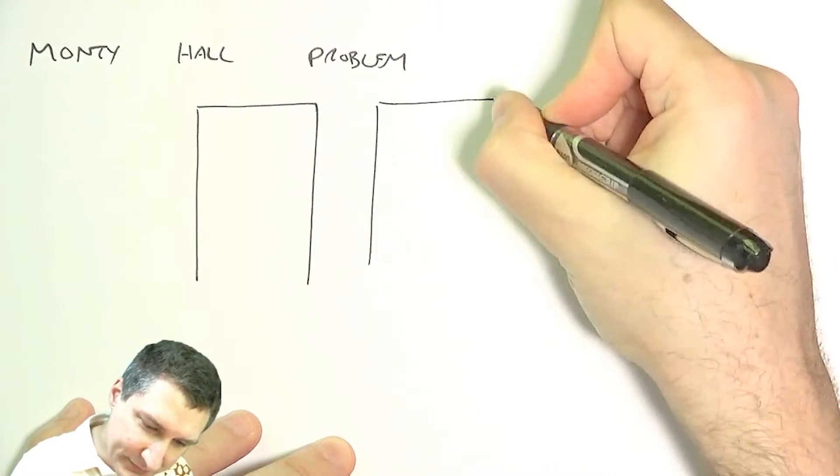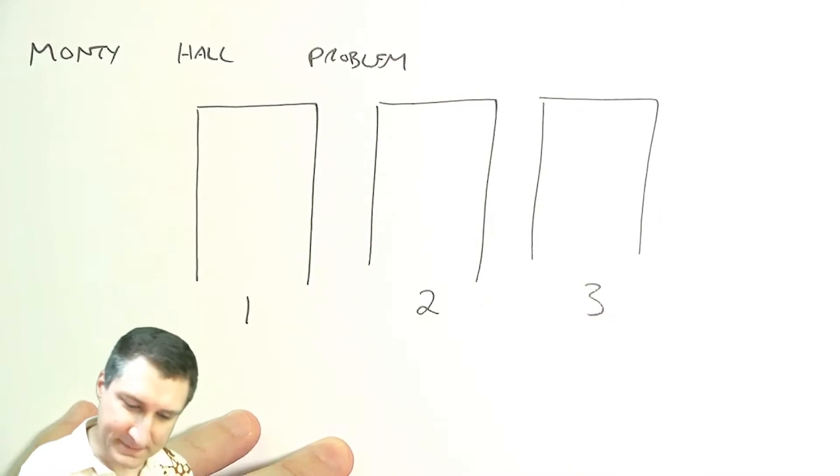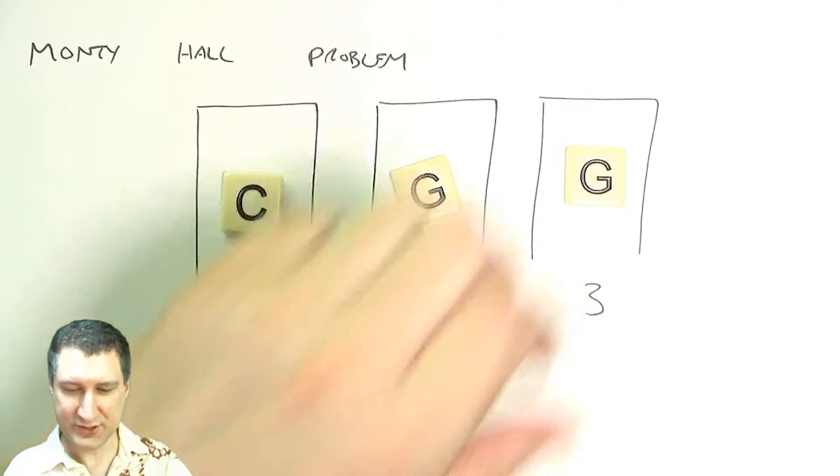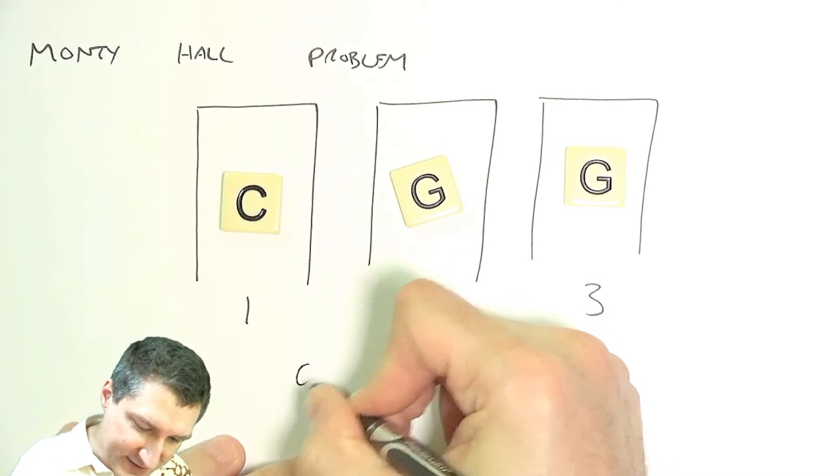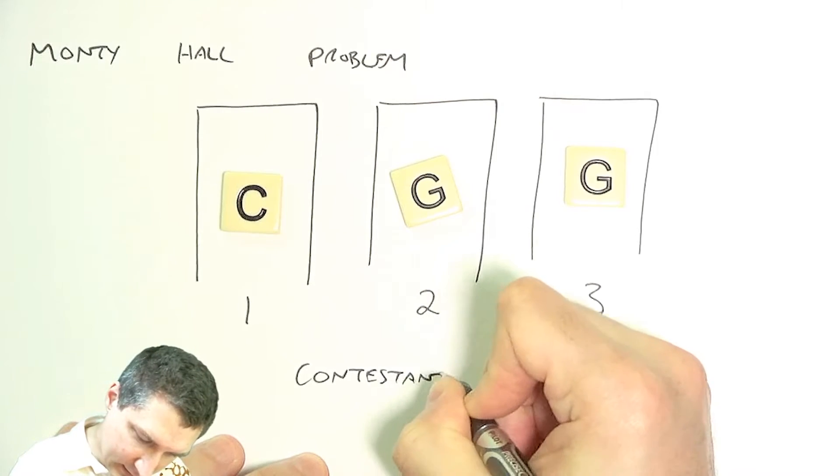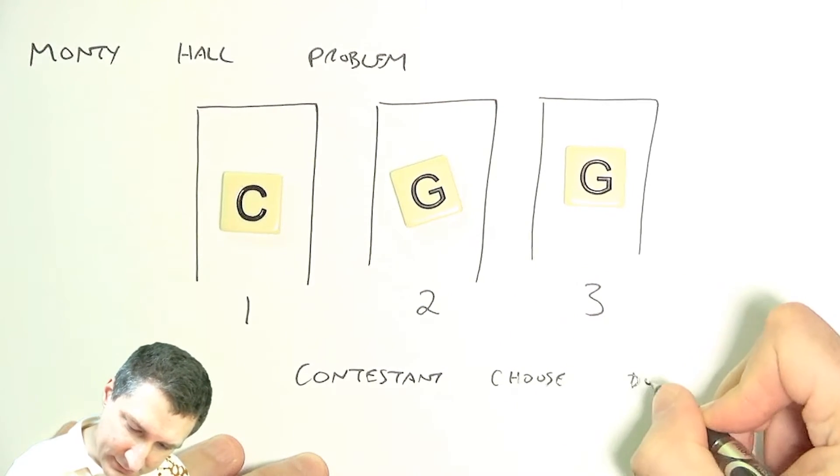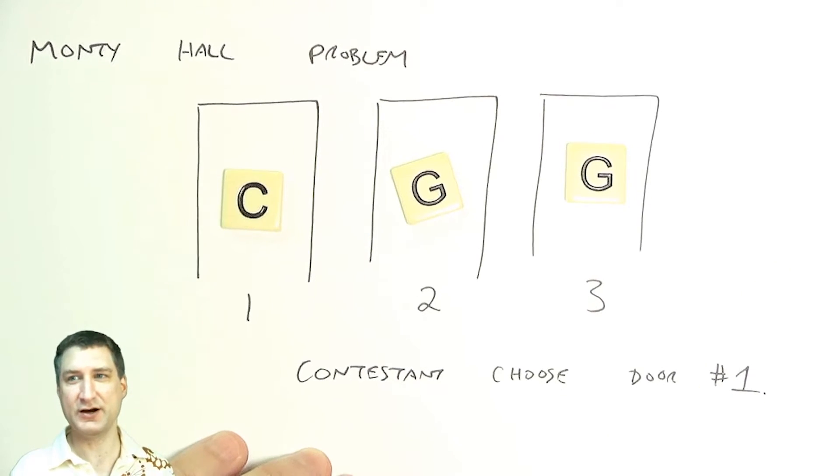You have three doors numbered one, two, and three. Behind one of these doors is a new car, and behind the other two doors are loser prizes like goats. The setup is that you're the contestant. You choose a door. You don't know what's behind it yet, but you've chosen door number one. You think that's where the car is.